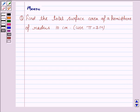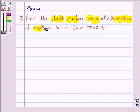Hello and welcome to the session. Let us discuss the following question. Find the total surface area of a hemisphere of radius 10 cm. Use pi equals 3.14.